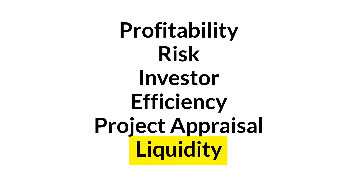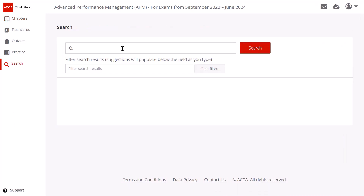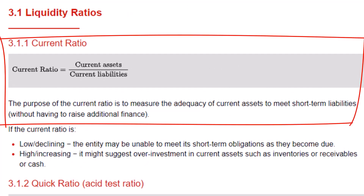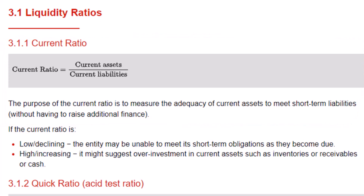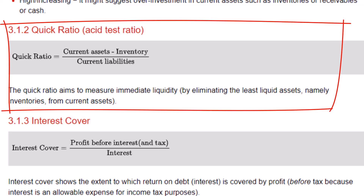Let's look at the metrics you're responsible for in APM — you can find these in the Study Hub if you search 'liquidity.' The first ratio is the current ratio. This is a relative metric that measures a company's current assets — inventory, receivables, cash and equivalents — over current liabilities. By how much do our current assets exceed our current liabilities? Do we have enough cash on hand to settle our debts?